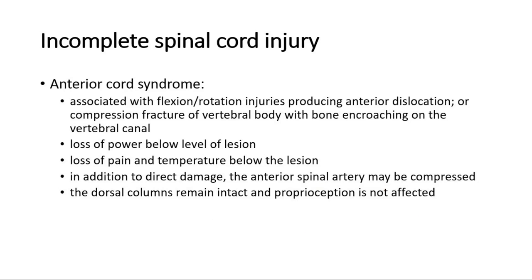First, anterior cord syndrome. It is associated with flexion or rotation injuries producing anterior dislocation or compression fracture of the vertebral body with bone encroaching on the vertebral canal. There is loss of power below the level of lesion, and loss of pain and temperature below the lesion. In addition to direct damage, the anterior spinal artery may be compressed. The dorsal columns remain intact and proprioception is not affected.